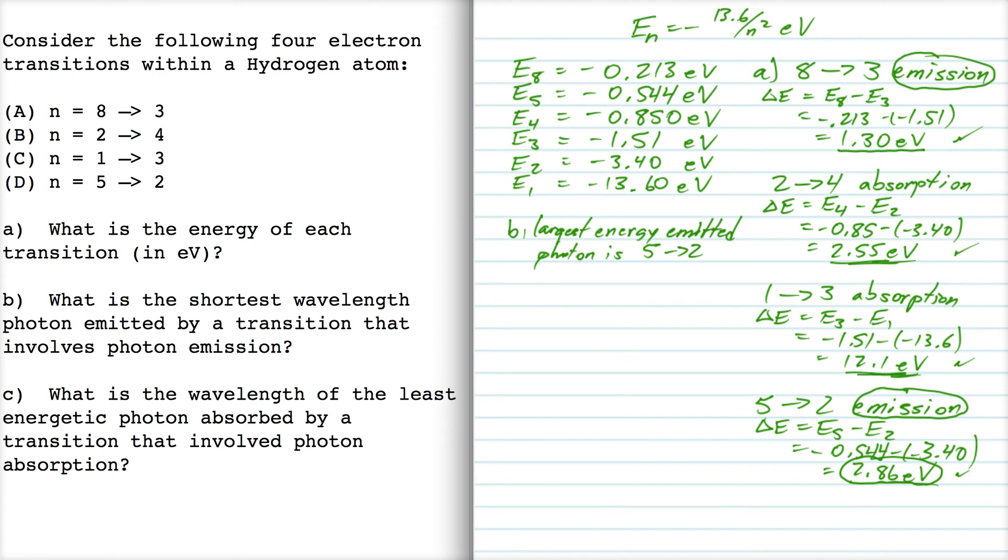So the answer is the largest energy emitted photon is in the 5 to 2 transition. So we're going to set, let's see, to find the wavelength of that photon, we're going to set hc over lambda equal to 2.86 eV. And so lambda is hc divided by the energy. Now I've got to have this energy in joules. So that's 4.58 times 10 to the minus 19 joules, when I convert this into joules by multiplying by 1.6 times 10 to the minus 19. When I do that, I get 4.34 times 10 to the minus 7 meters, which is 434 nanometers. So there's part B.